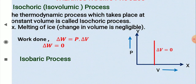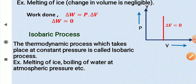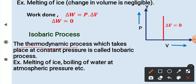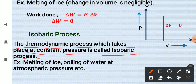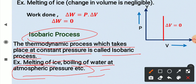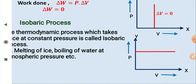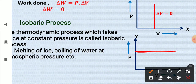The isobaric process is the thermodynamic process which takes place at constant pressure. If melting of ice or boiling of water takes place at normal atmospheric pressure, then they can be treated as isobaric processes. Looking at the PV diagram, the pressure is constant throughout.